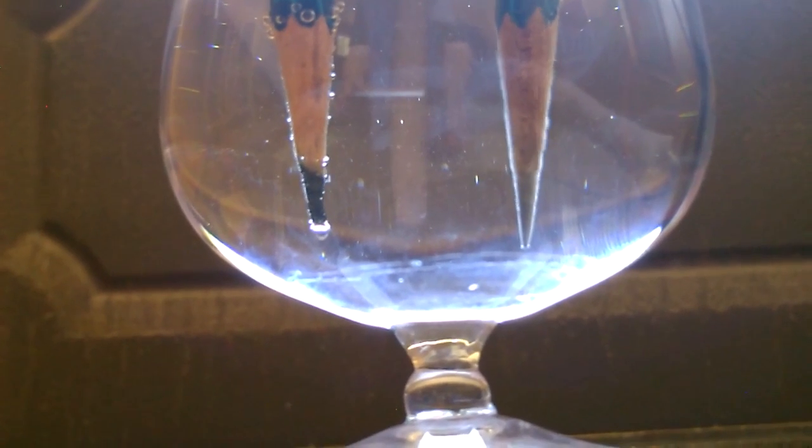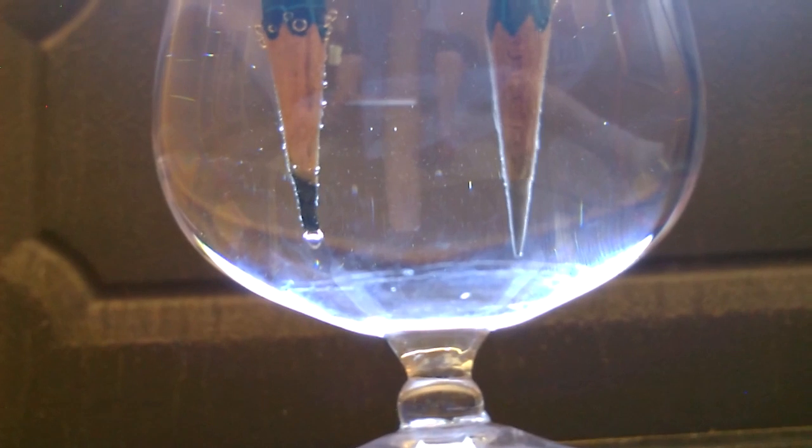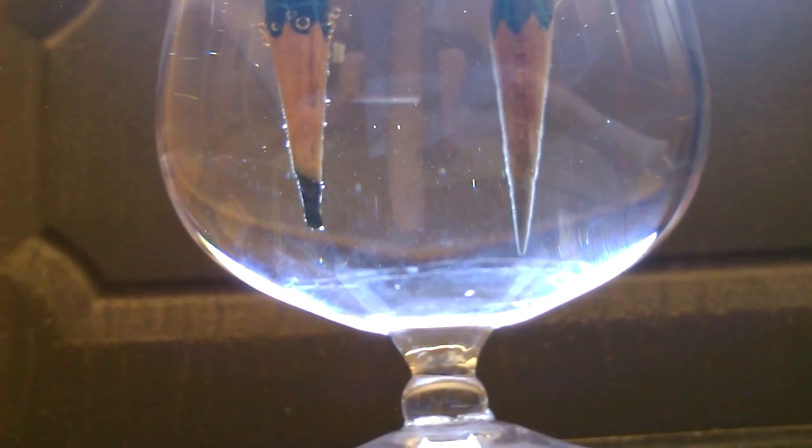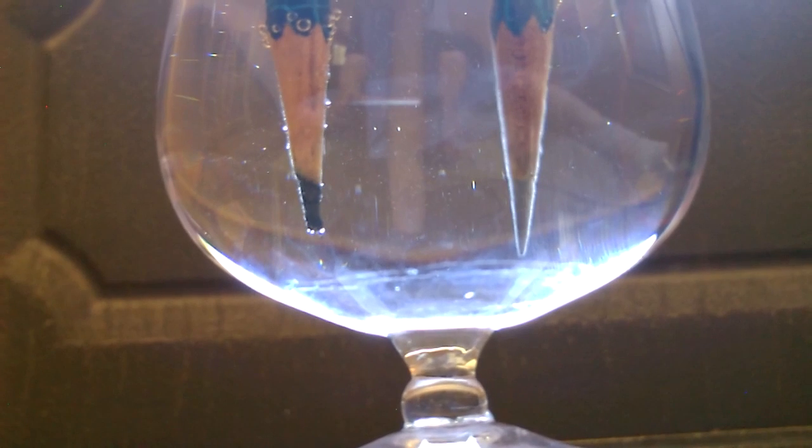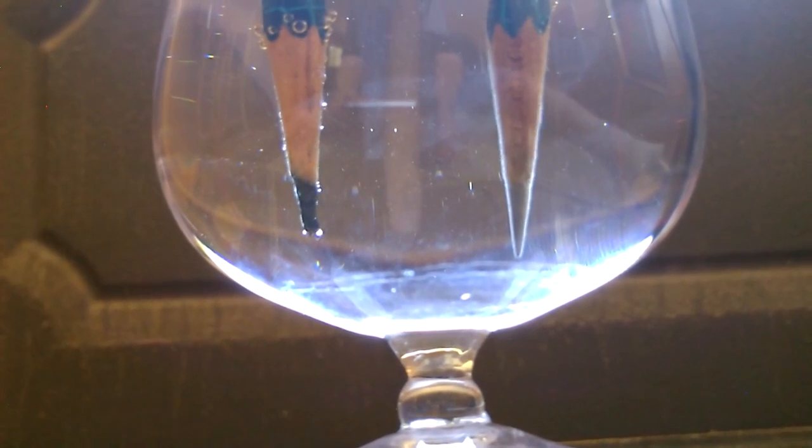Just using a solar panel some water and a couple of pencils you can convert sunlight into electricity and then use that electricity to break water into hydrogen and oxygen gas. It's amazing.